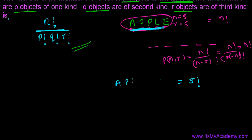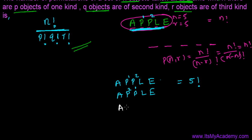Consider: I write A, P1, P2, L, E. Next time I write A, P2, P1, L, E — I've exchanged the positions of the two P's, but the word is still the same: APPLE. This happens every time. Whether I write A, P, L, P, E or P, P, A, L, E — in every arrangement, P1 and P2 can be swapped to give the same word. So every word has two possibilities that look identical. This means we do not have five factorial distinct arrangements; we have fewer, because something is being repeated.